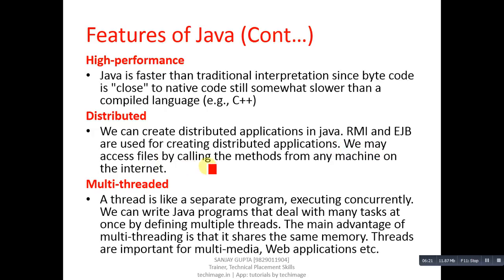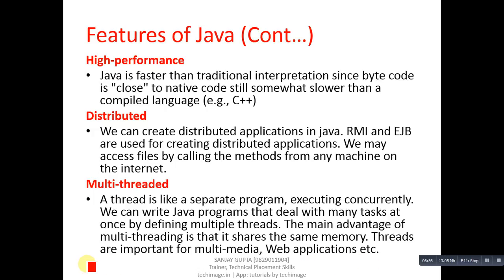Multi-threaded: a thread is like a separate program executing concurrently. With the multi-threaded feature we can run more than one function simultaneously in Java. We can write Java programs that deal with many tasks at once by defining multiple threads. The main advantage of multi-threading is that threads share the same memory. Threads are important for multimedia or web applications — for example, opening multiple tabs in a browser is an example of multi-threading.